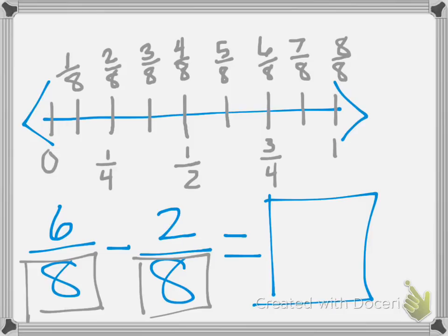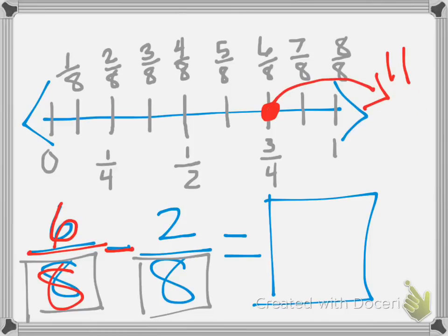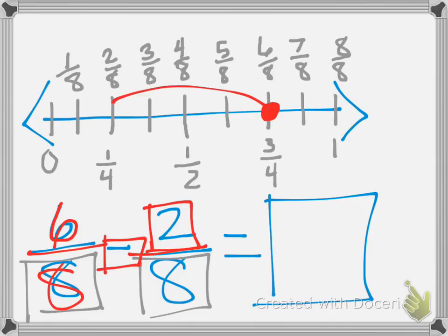So now here we are. I'm going to switch and get a big, nice, bright red color so that you can see it, since he's using red paint. And I'm going to mark six-eighths, which is right there. And I'm going to be taking away, so I'm going to be going not forward, because I'm subtracting.